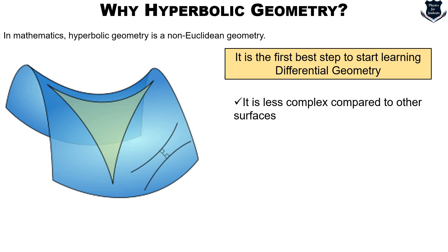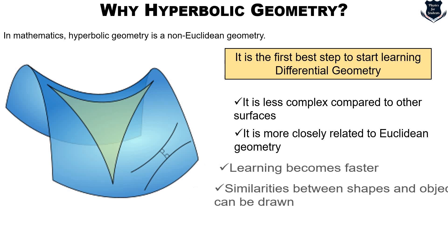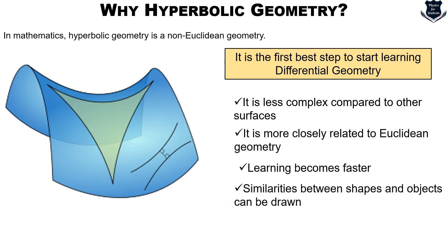First of all it is less complex compared to other surfaces because it is a kind of a saddle shaped surface. It is very close to Euclidean geometry and that is why the relationship and drawing the similarity becomes easier and the learning becomes faster and we can always start to draw similarities between the shapes and objects we know so that knowing something and then knowing the unknown it becomes easier to understand.